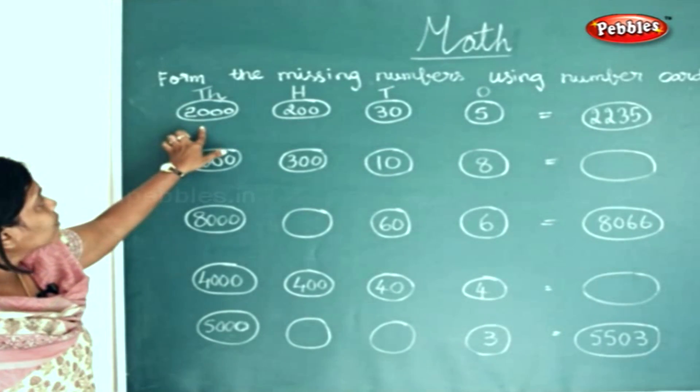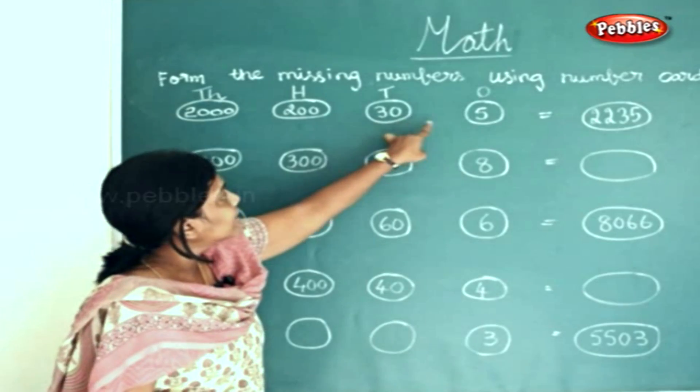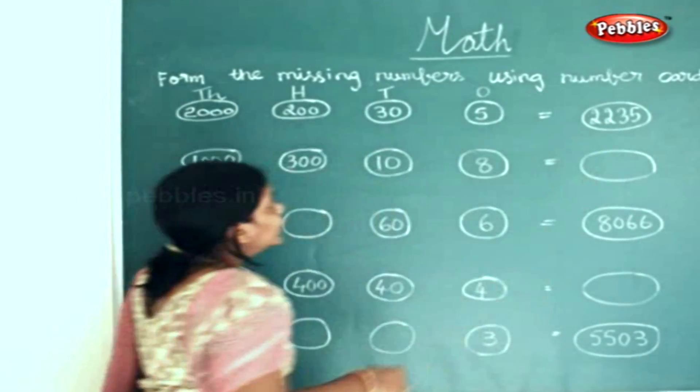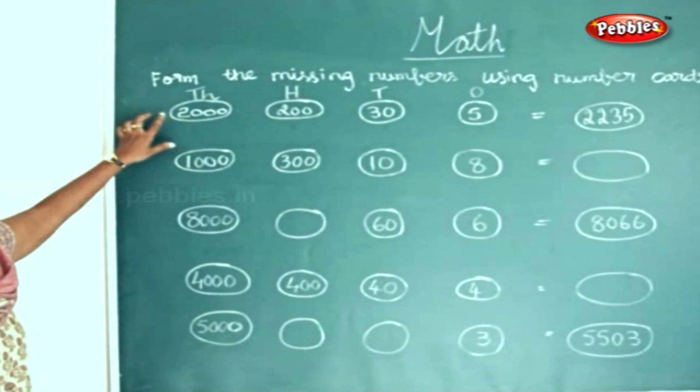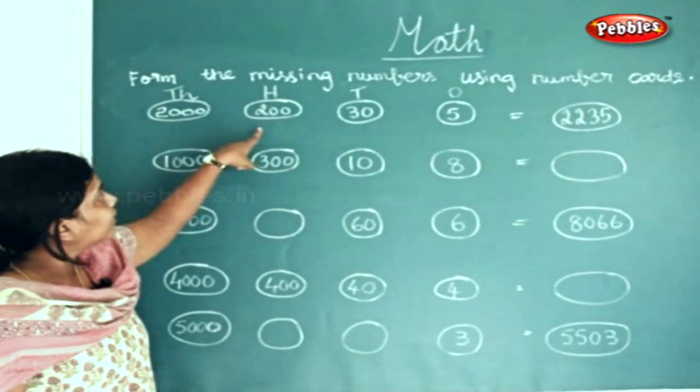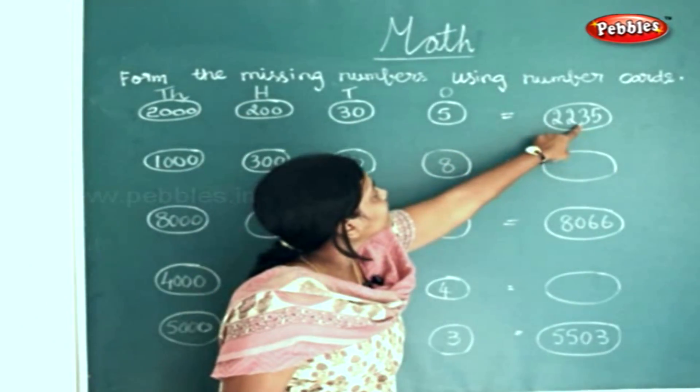So 2235, that makes 2235. You can find 2000 in the thousands place. In the hundreds place you can find 200. And in the tens place you can find 30.